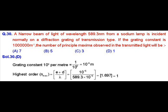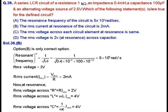To calculate the highest order, we use the formula: (e + d) = n_max × λ. So we can calculate n_max as (e + d) upon λ. Putting in the given values, we get 1.697, which can be approximated to 1. So the correct option here will be option D.